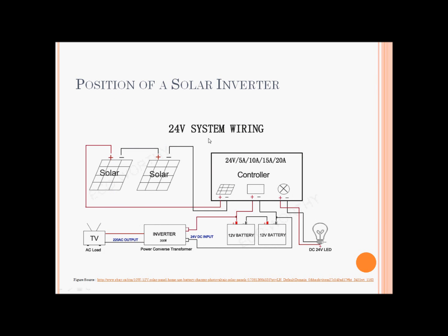This is a standalone photovoltaic system. All it has is a photovoltaic array, a charge controller to charge the batteries using maximum power point tracking, and an inverter connected to a set of DC batteries. The power from the DC source is connected to the inverter and the inverter supplies AC output to the AC load. Sometimes the controller is combined with the inverter. As you can see, this is a standalone system — there is no utility or AC source connected anywhere.